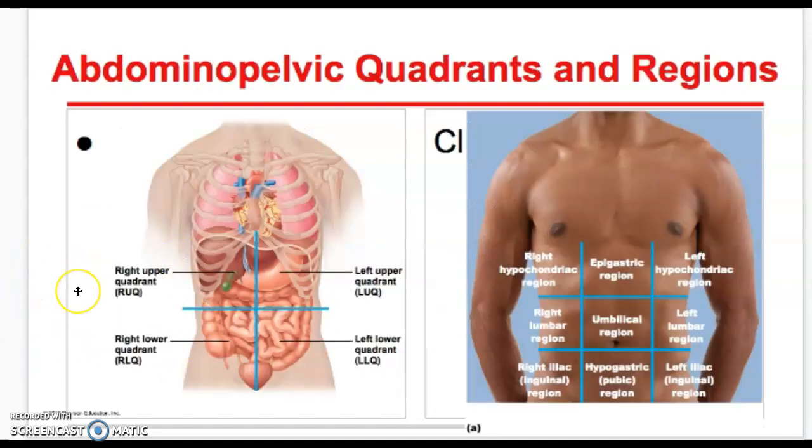And the last thing that I just want to cover quickly is we can break the abdomen into quarters or into nine regions. So the quadrants or the quarters of the quadrants are pretty easy. We have the right upper, the right lower, the left upper, and the left lower. And so in the right upper, we have the liver and the gallbladder, some of the intestines. The left upper, we have the stomach and the intestines. The right lower, it's intestines, appendix and bladder. And the left lower is intestines and bladder.